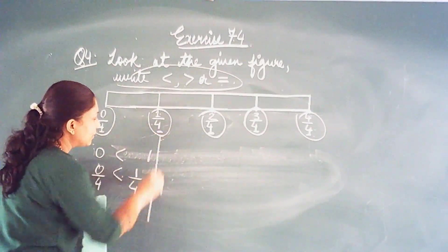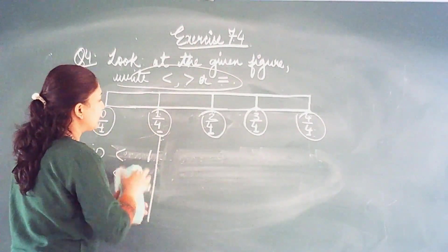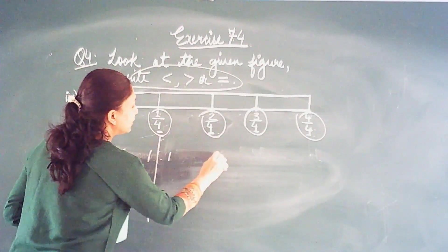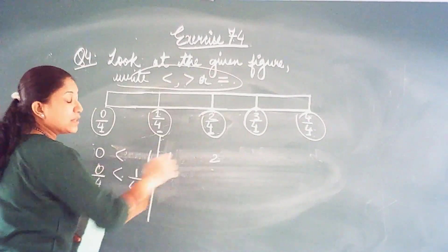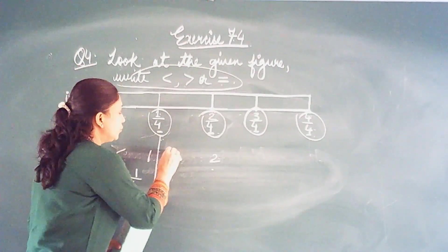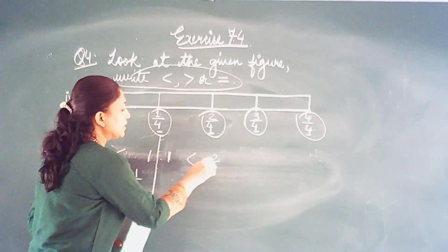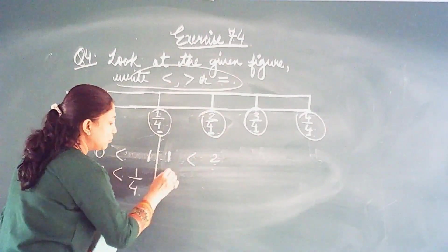Now let us see this one. We will compare the numerator. We will compare the numerator 1 and here 2. Now you check. What do you see? 2 is greater. So you put a sign. 1 is less than 2. So when 1 is less than 2, 1 upon 4,